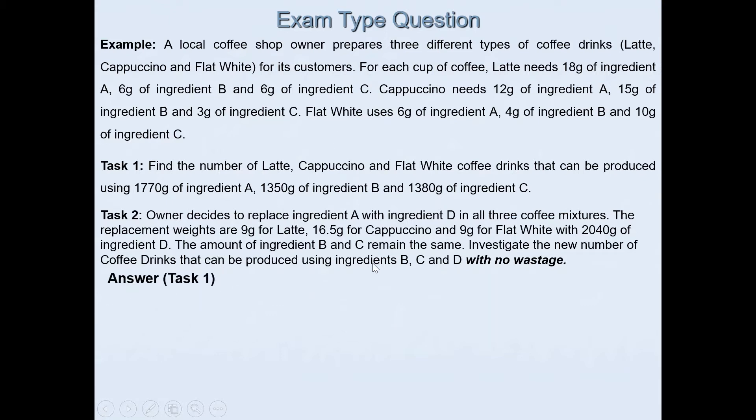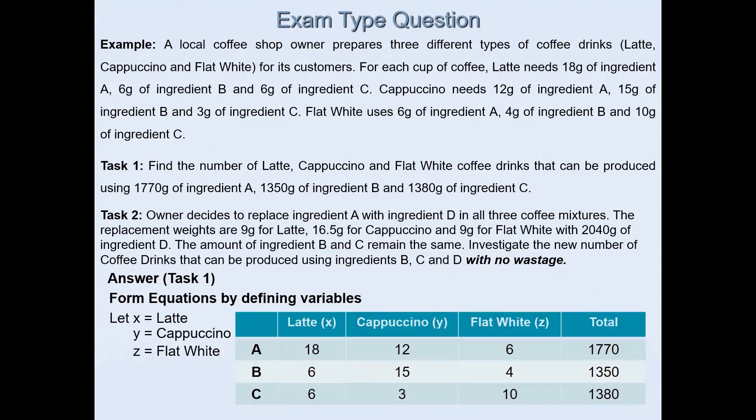To answer the question we will need to form equations by defining the variables. In this case I can say let x be latte. We are given three different types of coffee drinks, so we can say x is latte, y is cappuccino, and z is flat white. I used the information given in context and created a table.